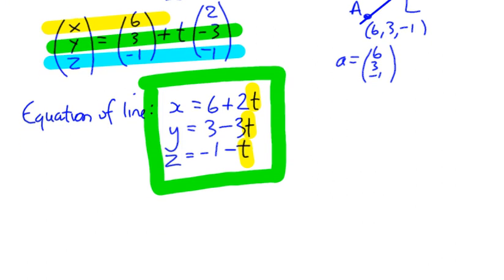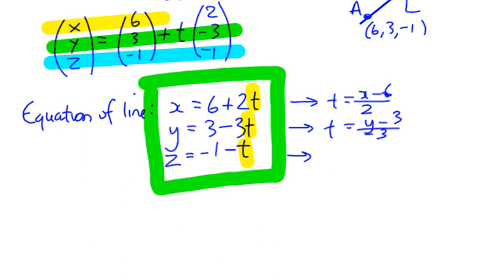If we were to rearrange these equations in terms of t, we would end up with these things here. In the first one, we would have t equals x minus 6 over 2. The second one, we would have t equals y minus 3 over negative 3. And in the third z equation, we would get t equals z plus 1 over negative 1.